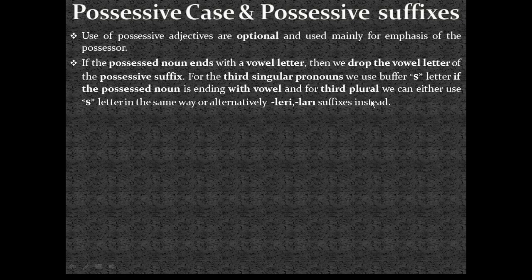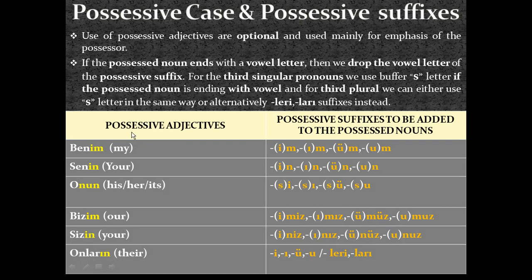For the third person plural possessive adjective, we have an option. We can either use 's' letter like we did for third person singular pronouns for possessed nouns ending with a vowel letter, or alternatively, we can use 'lar' or 'ler' suffixes. On the left side, there are possessive adjectives, and on the right side are possessive suffixes to be added to the possessed nouns. For first person singular 'benim', the possessive suffixes for possessed nouns ending with a consonant letter — not with a vowel — are: im, ım, üm, um. But if the possessed noun ends with a vowel letter, since these suffixes already start with a vowel, to prevent vowel clash I drop the vowel letter of the possessive suffix, just applying: m, m, m, m.